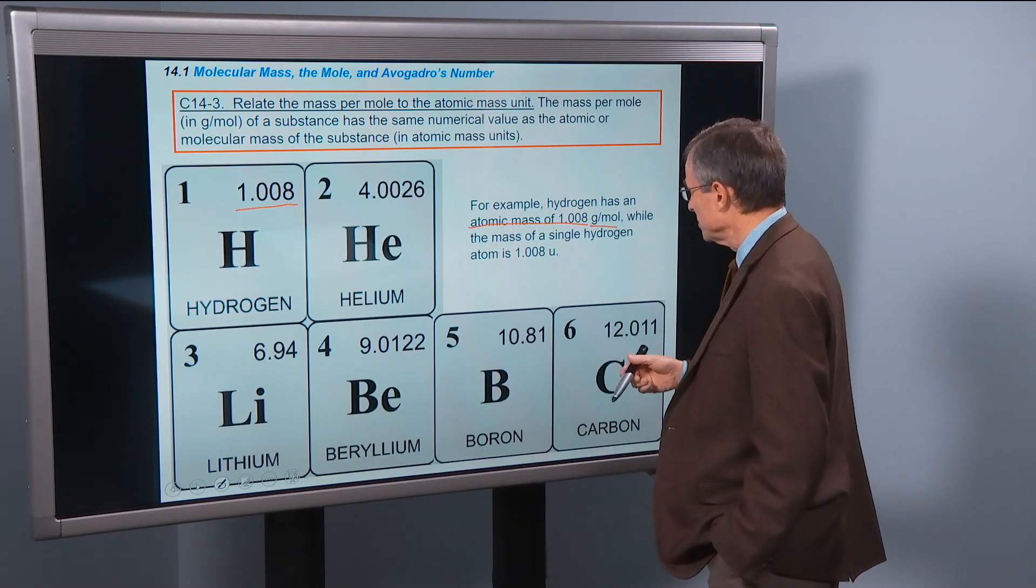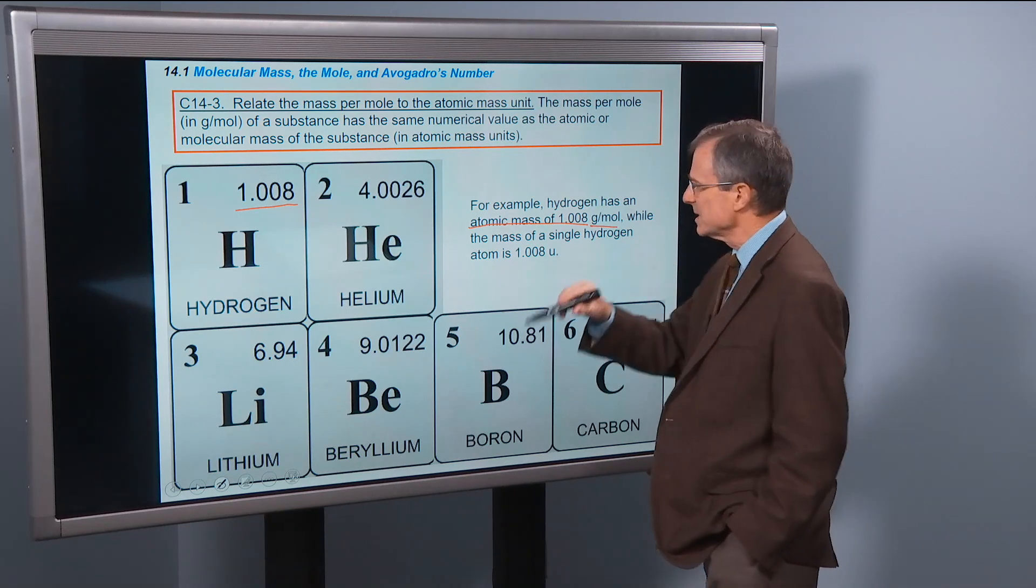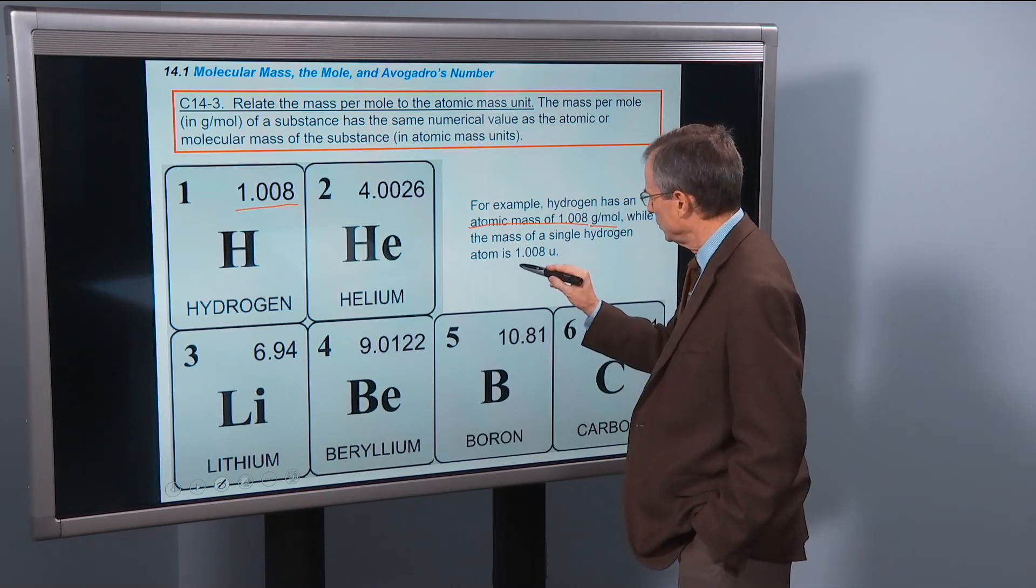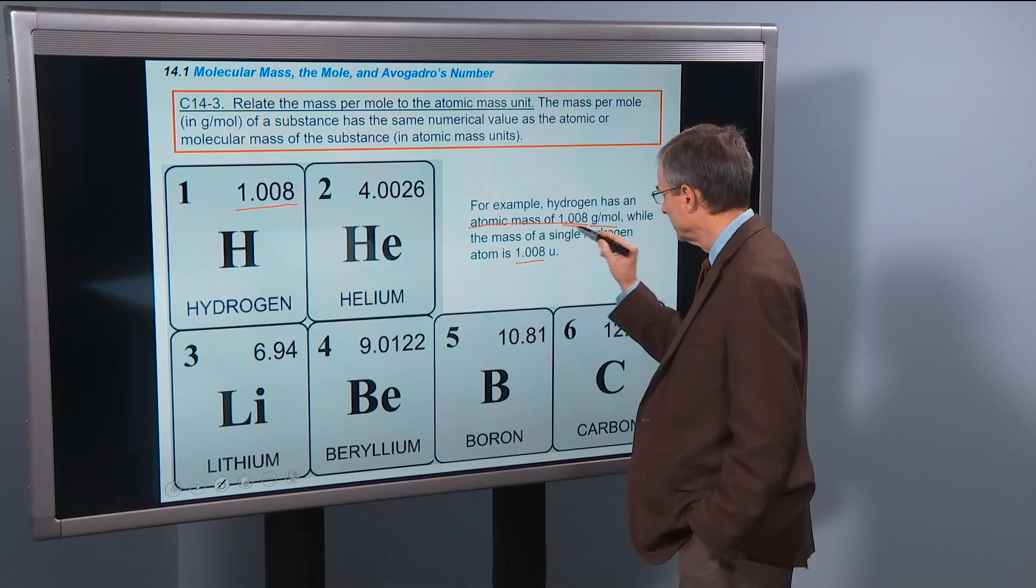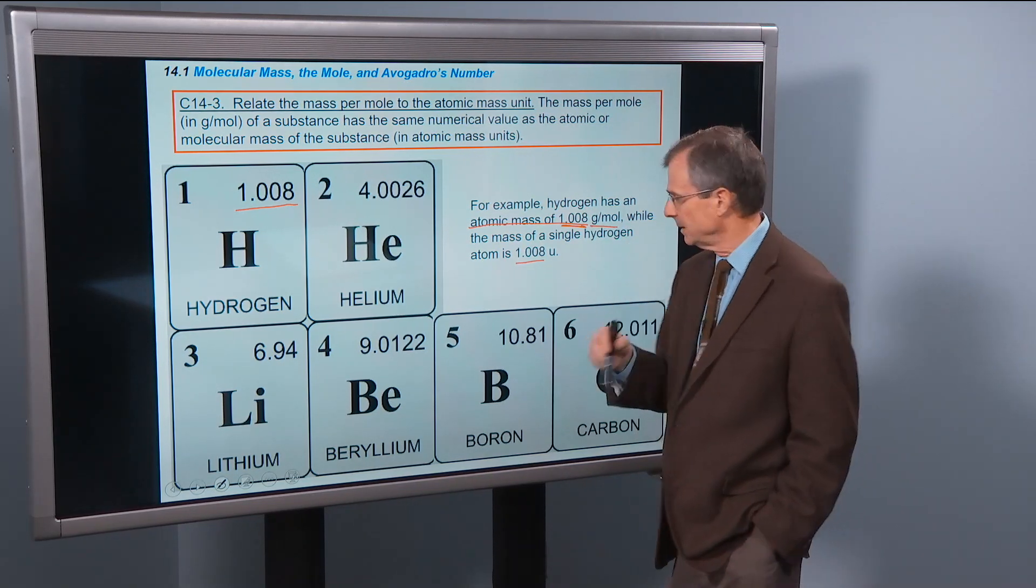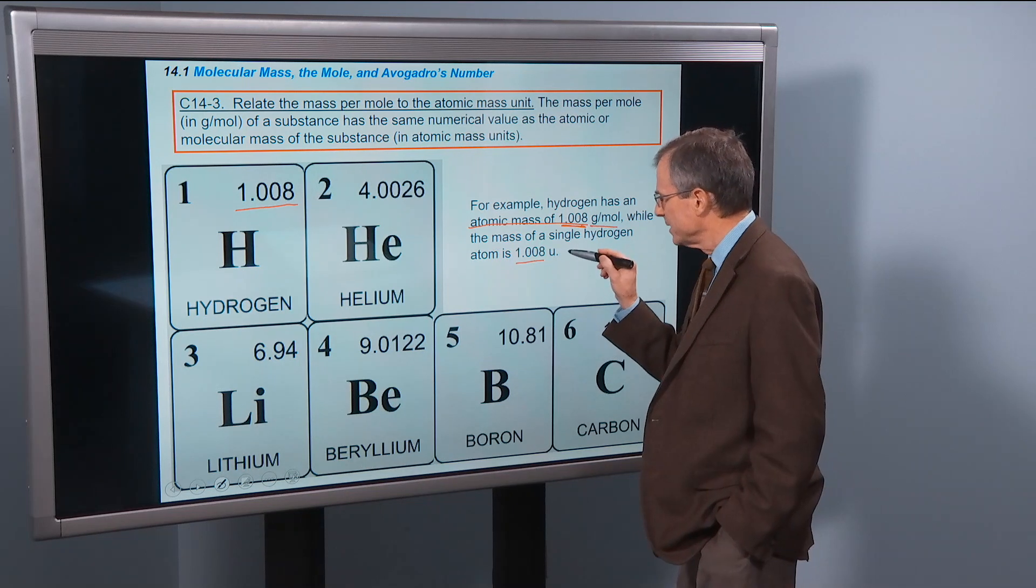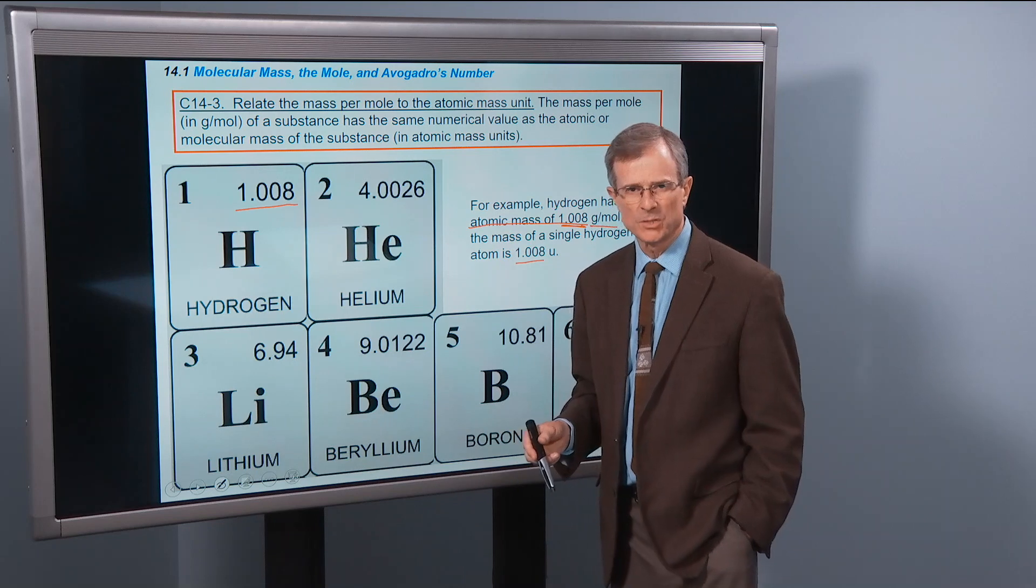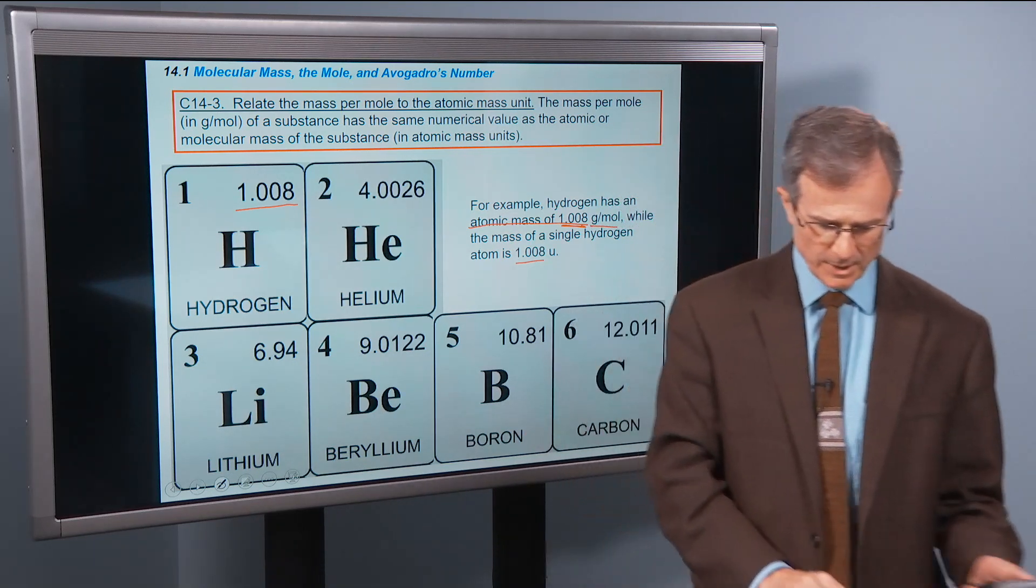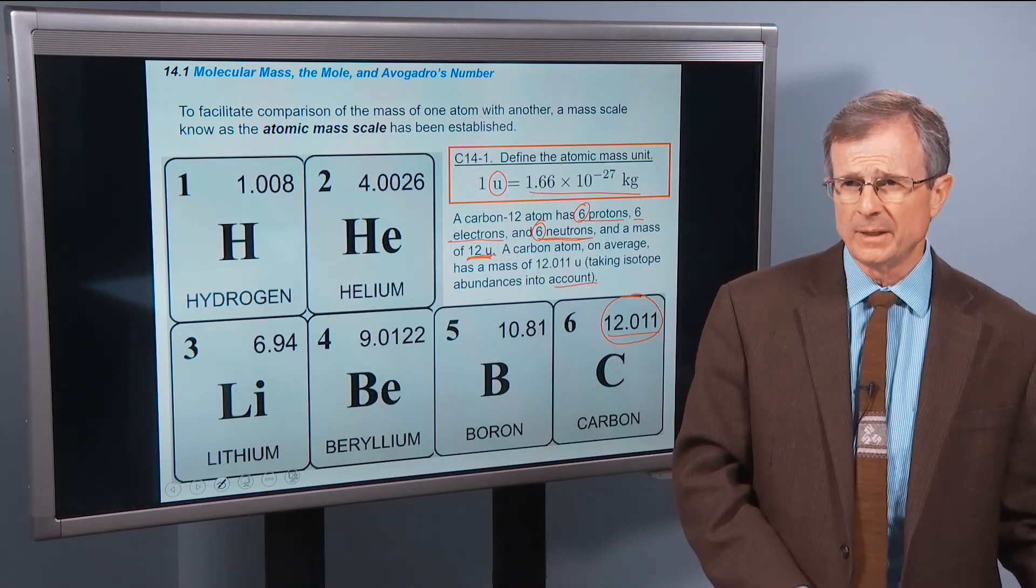But it's also the mass of a single hydrogen atom, which is 1.008. Same number, but a different meaning. 1.008 times U, which is that atomic mass unit, 1.66 times 10 to the minus 27 kilograms.